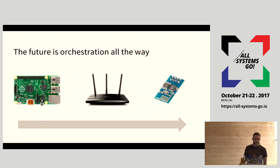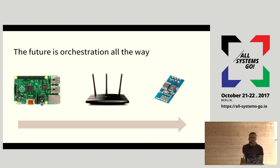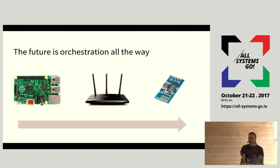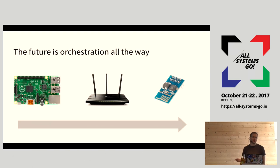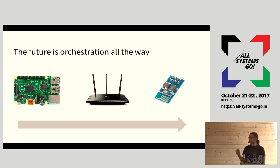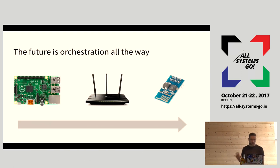At All Systems Go we talk a lot about orchestration, specifically because Linux is the de facto standard operating system for servers. What I believe is one of the possible solutions for the IoT update problem is orchestration all the way - not just on servers, but also on edge gateways down to very constrained devices. In servers we already don't SSH into a machine and update packages anymore, and we need to move away from that in IoT too.